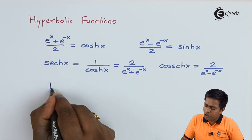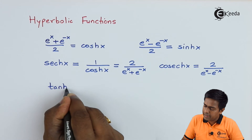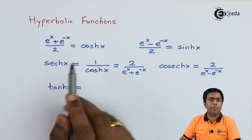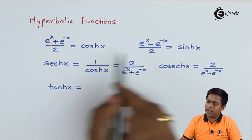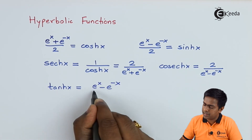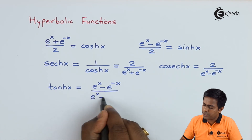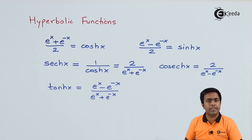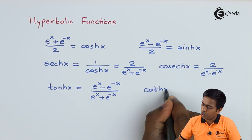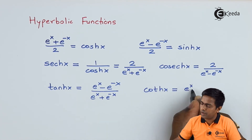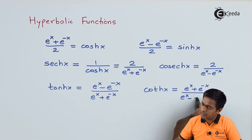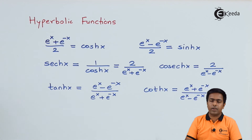To get hyperbolic tan x, we divide hyperbolic sin x by hyperbolic cos x, giving us e to the power x minus e to the power minus x, divided by e to the power x plus e to the power minus x. The last formula, hyperbolic cot of x, is e to the power x plus e to the power minus x, divided by e to the power x minus e to the power minus x.